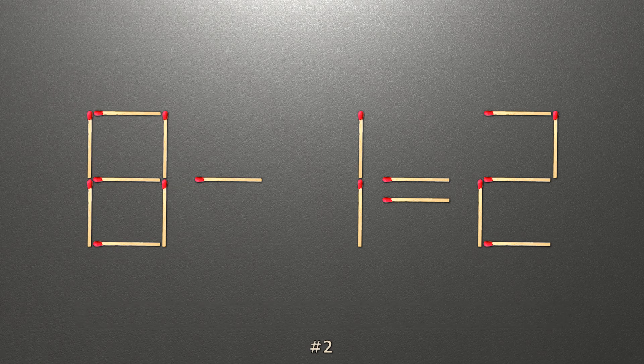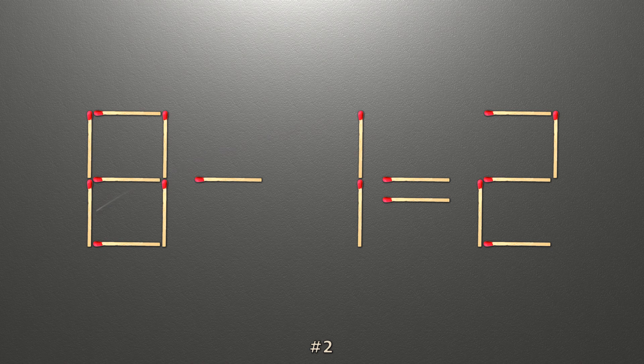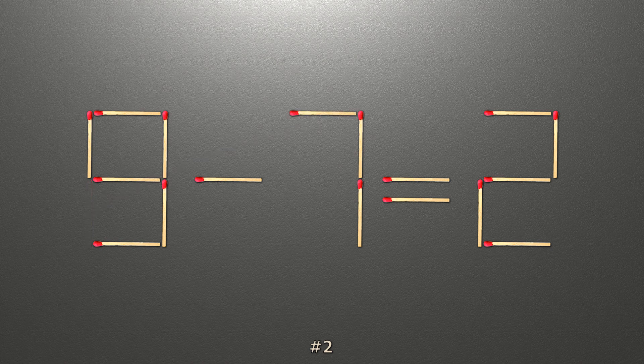To do this, all we need to do is move this match right here. Now when we check the condition, 9 minus 7 is 2, and 2 equals 2. Now our equality is correct.